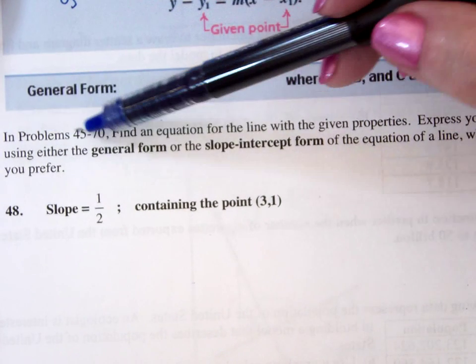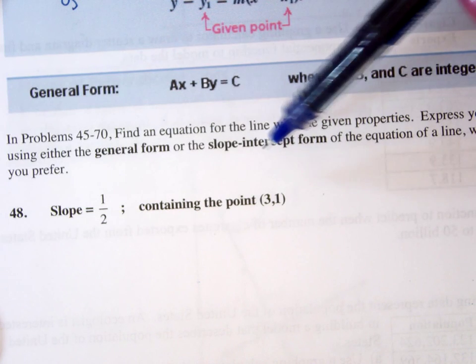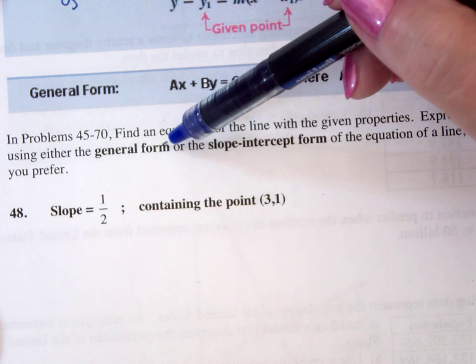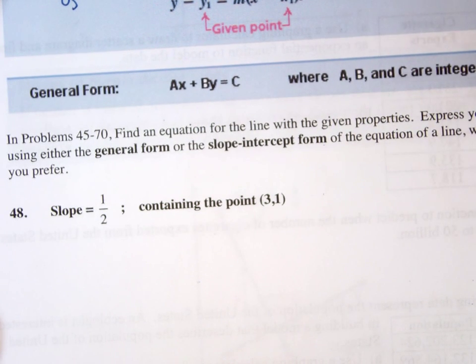So it says here, it says in problems 45 through 70, find the equation of the line with the given properties, express your answer using either general form or slope-intercept form of the equation of the line, whichever you prefer.